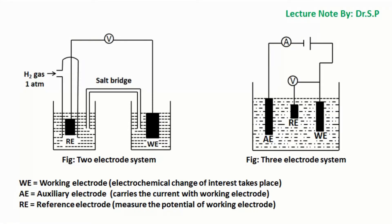In the two-electrode system, current flows through the reference electrode, which causes its standard potential to change. But in the three-electrode system, the current flows through the auxiliary electrode, so the potential of the reference electrode does not change.